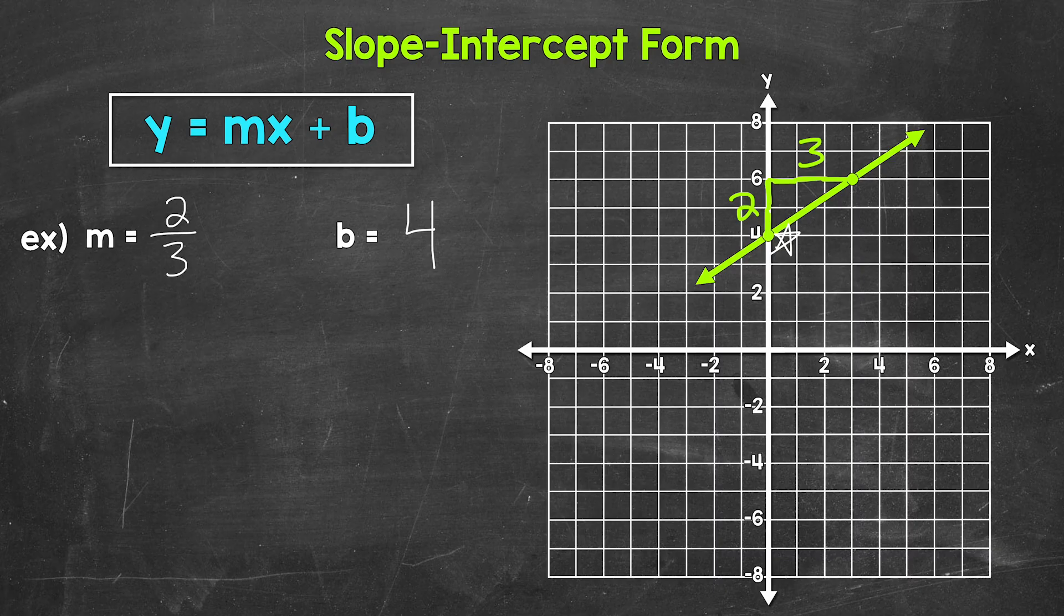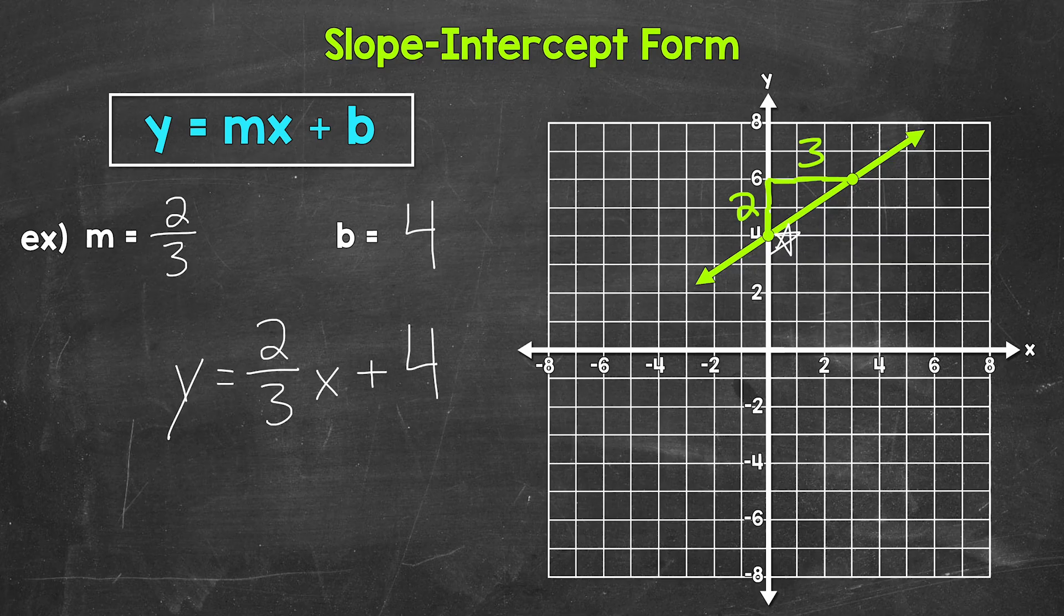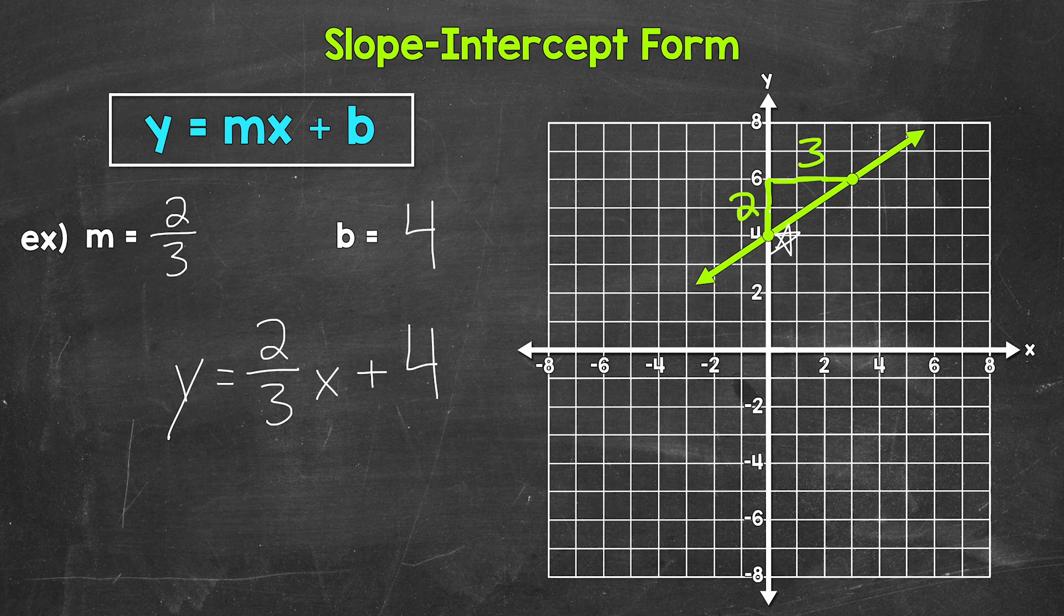So our slope equals 2 thirds. Now we plug 2 thirds in for m and 4 for b. So our equation for this line is y equals 2 thirds x plus 4. And that's it. We're done. That's our equation.